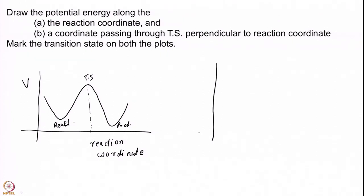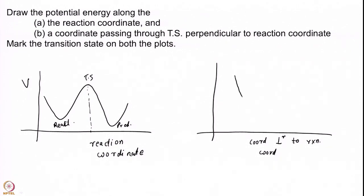However, what I want you to also understand from this course is that if I choose a coordinate perpendicular to the reaction coordinate at the transition state, I will get an energy surface that looks like a minimum — and this is my transition state. This is a very important concept: the transition state is a minimum for any coordinate that passes perpendicular to the reaction coordinate.